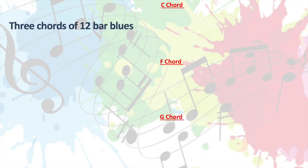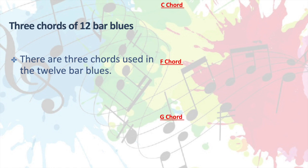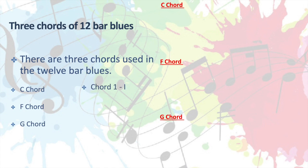So, three chords of the 12-bar blues. We use three chords: a C chord, an F chord, and a G chord. But obviously using all these different letters in music would get really confusing, so we can also abbreviate them in Roman numerals. For the C chord it would be chord 1, so with Roman numerals it would be I. For the F chord we'd call that chord 4, going up the alphabet, which is IV. And G is chord 5, which is V.